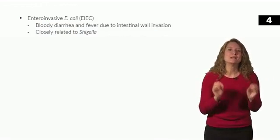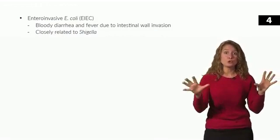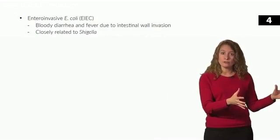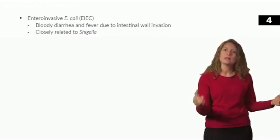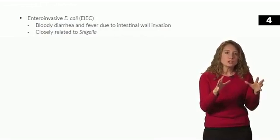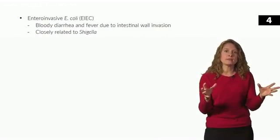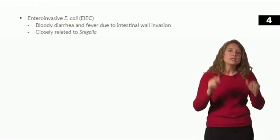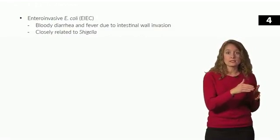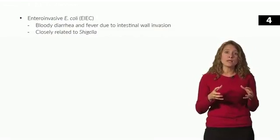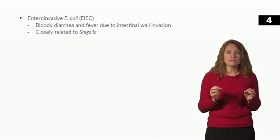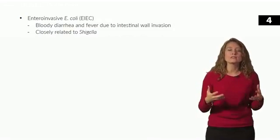Enterohemorrhagic E. coli does not invade the cell — it only attaches to the cell and then produces shiga toxin, which causes vascular damage and thus bloody diarrhea. In the case of enteroinvasive E. coli, these bugs actually do invade the enterocyte like Shigella does, causing bloody diarrhea by destroying the colonic epithelium. That invasion of the wall also causes fever.